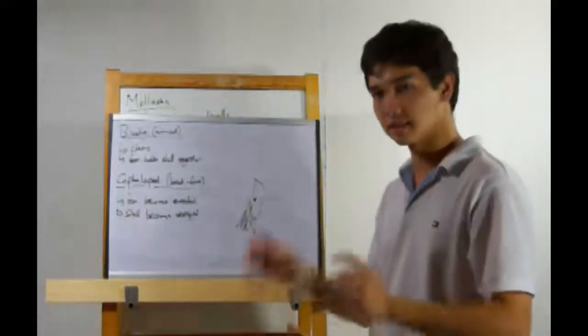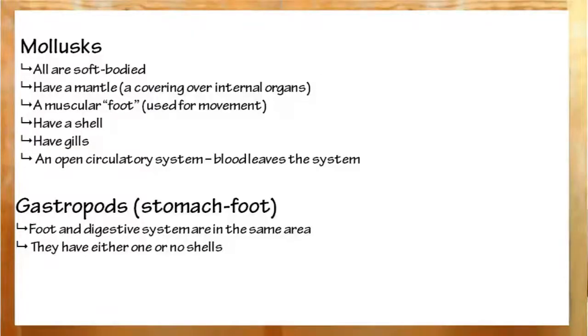And that's pretty much it for molluscs. To recap, all molluscs are soft-bodied, have a mantle, which is a covering for the internal organs, a muscular foot that helps it move, shells, gills, and an open circulatory system, which means blood will temporarily leave the circulatory system to have things diffuse in and out of it, but later re-enter.